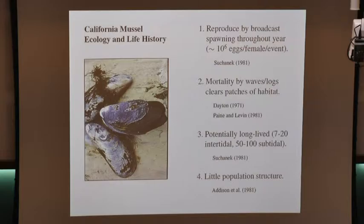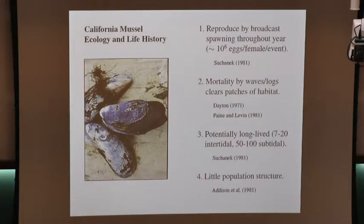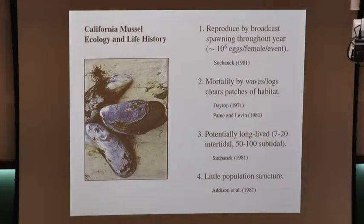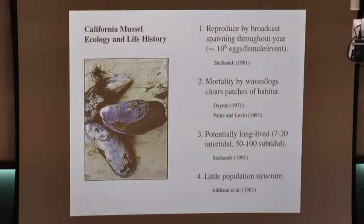There's also more predation probably in the intertidal zone than the subtidal zone. Mussels also show amazingly little population structure — if you look at FST all the way from Mexico up to Alaska, which is a long way, there's very, very little differentiation between geographic regions in the California mussel.